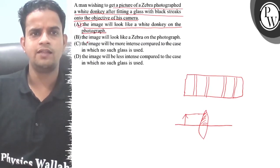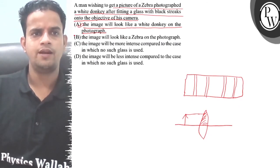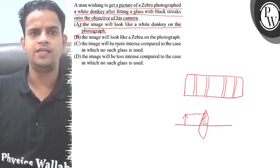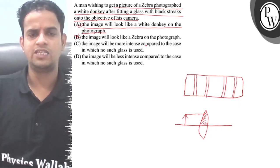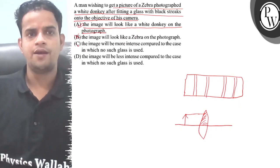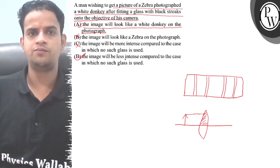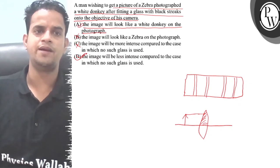The image will look like a zebra on the photograph? No, this is incorrect. The image will not be more intensity — intensity is lower, it cannot be more. In this condition, the image will be of less intensity.